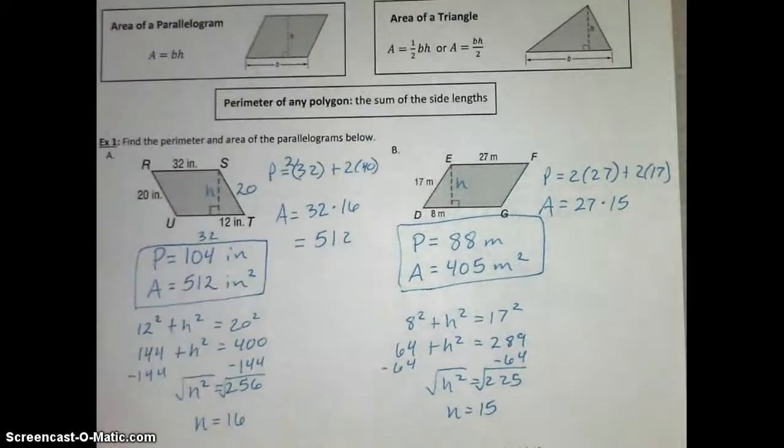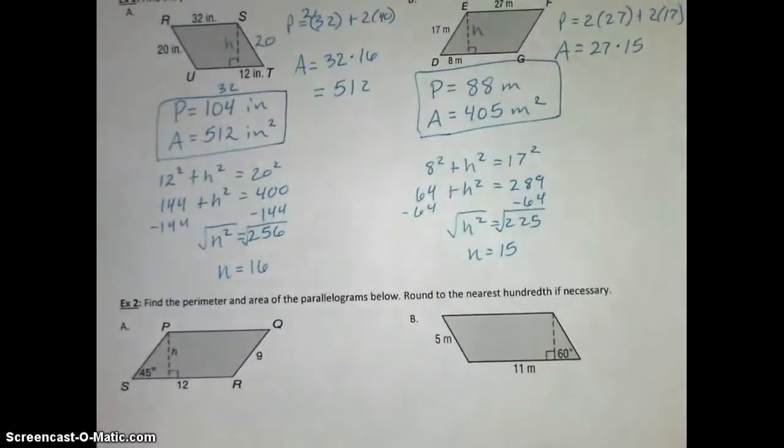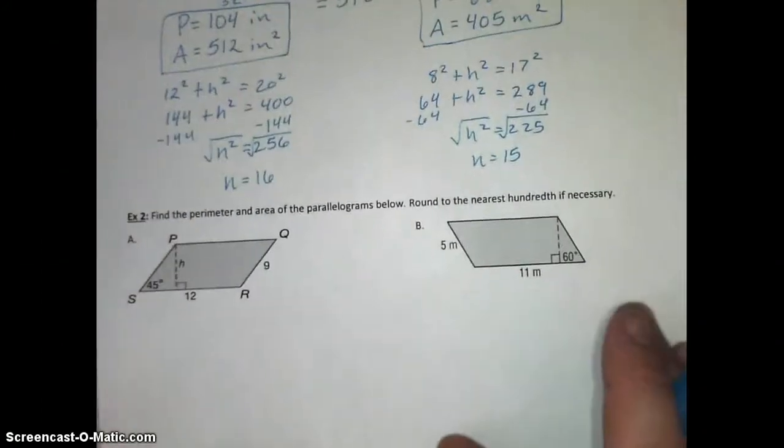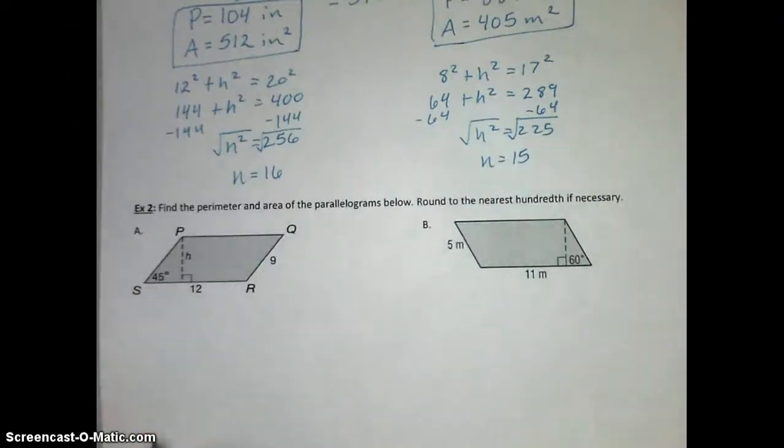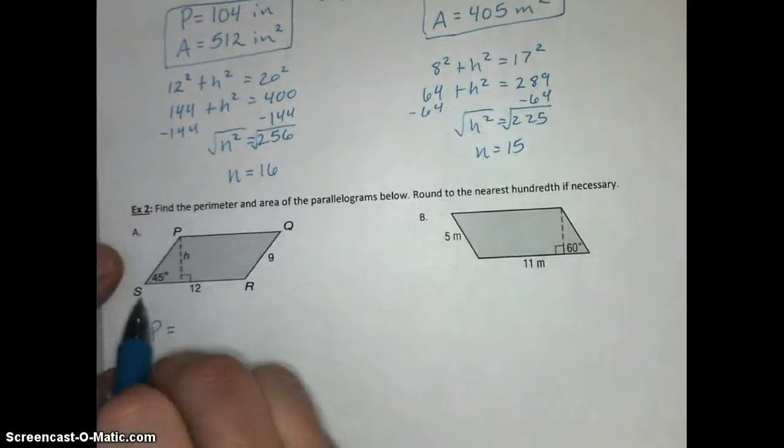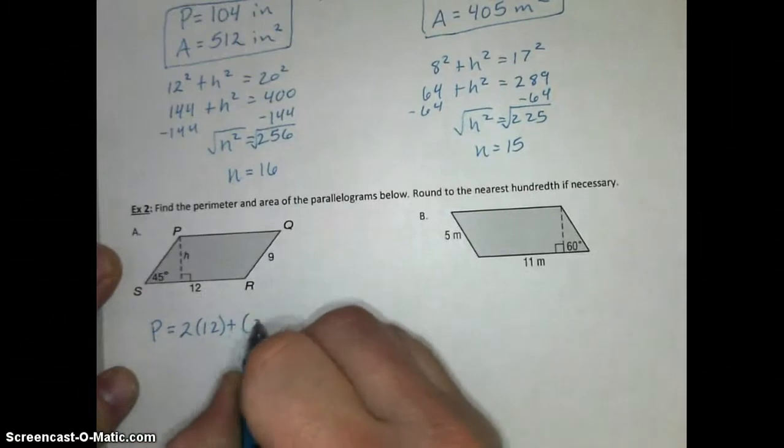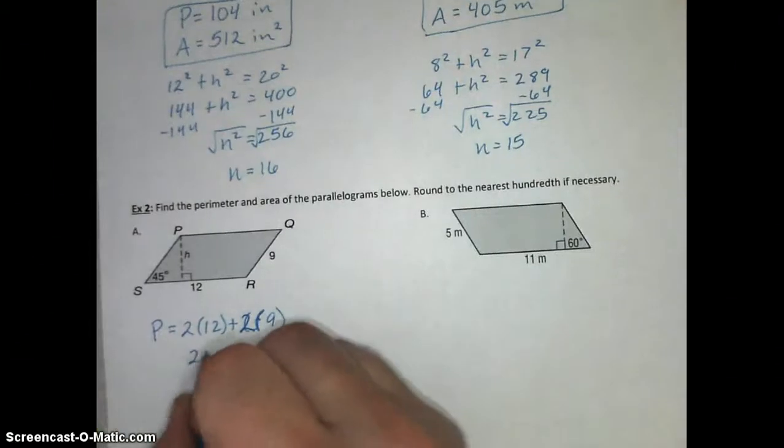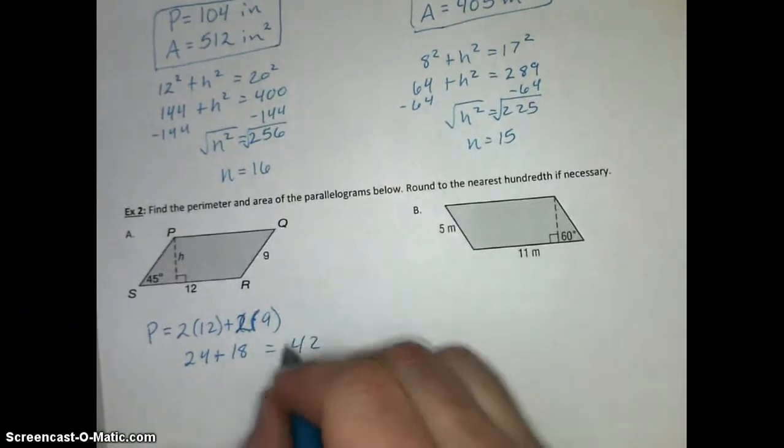That leads us to Example 2. This is time for Example 2, so stop forwarding the video if you get to this. Example 2. We want to find perimeter and area of the parallelograms below, and round our answers to the nearest hundredth if necessary. And I'll show you why that's necessary as we go through this. So I'm going to go ahead and work these out. Perimeter is two times this side of 12. They do imply that SR is full length 12. Plus, I want to do two times this side of nine. So we can go ahead and just figure that out. Two times 12 is 24. Two times nine is 18. 24 plus 18 is 42, and that is my perimeter.